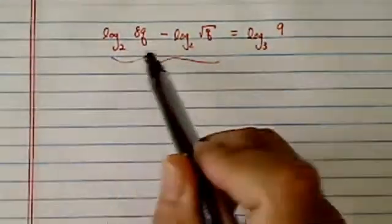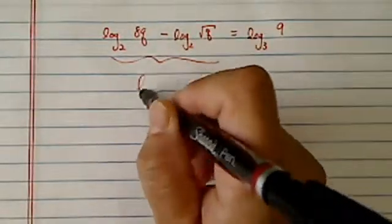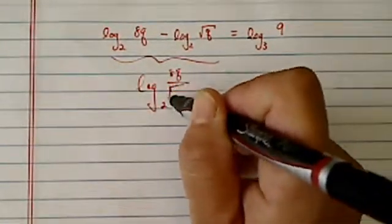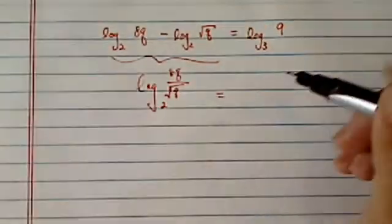We're going to use property. When two logs are subtracting, I can combine them. So it's log base 2, 8q over radical q. Now on this side,